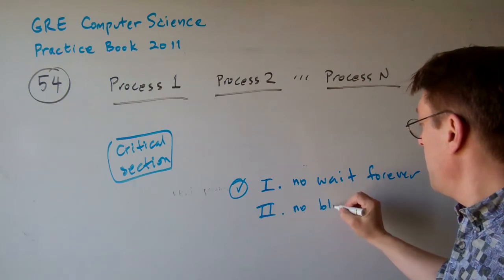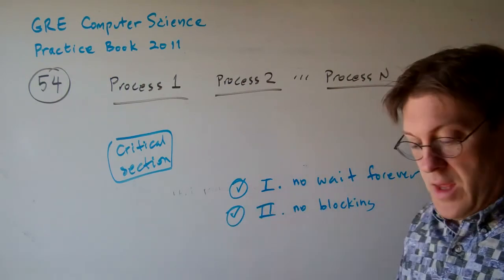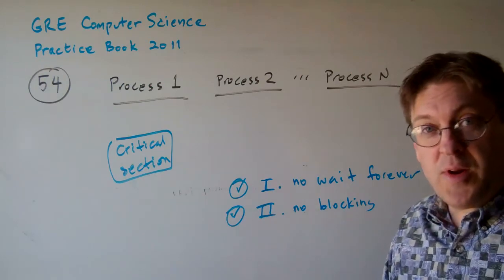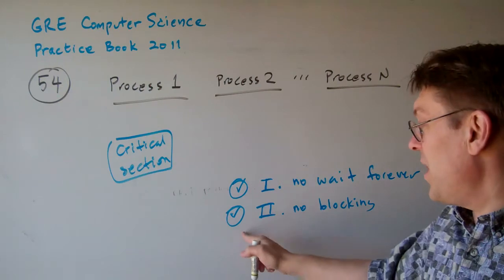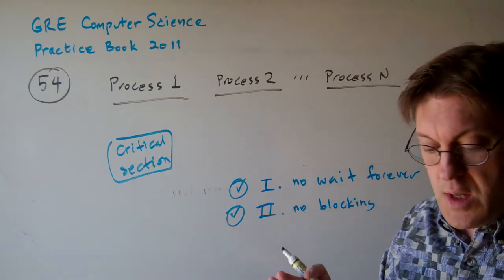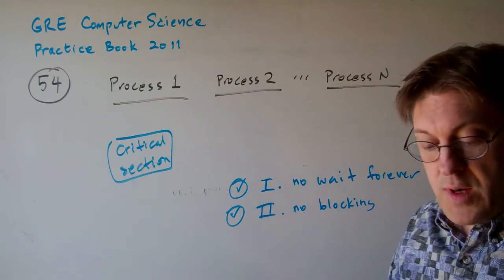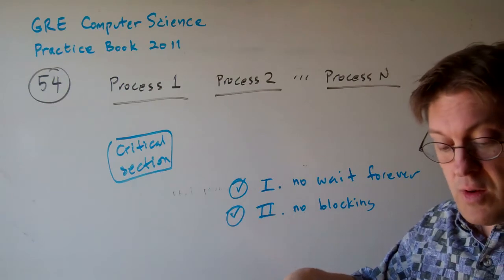So no unnecessary blocking. We don't want to critical region block other processes. So yeah, that's true. We don't want to block anybody unless we're using the critical region. But this one says if we're not, if no process running outside of its critical region can block processes from entering their critical region.